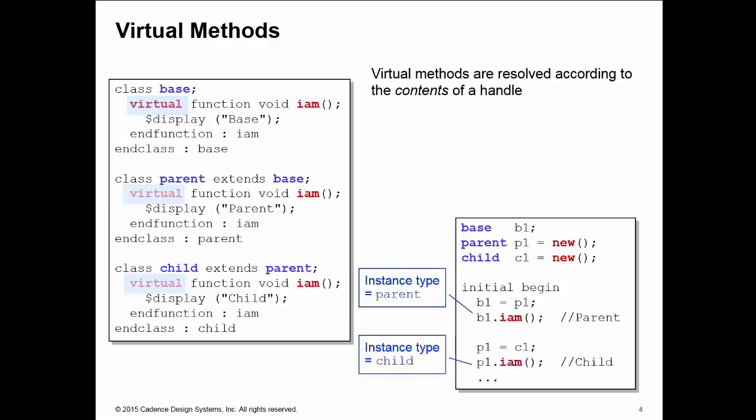This also works for the child class. Calling P1.im will first go to the parent class. When we get there, we find that the method is virtual. We then go back and look at the contents of the P1 handle, see it's pointing at a child instance, and direct the call to the child class to execute the 'I am' implementation of the child class. So now we can access the members of a subclass instance when it's held in a parent class handle — methods by declaring them virtual, and properties by accessing them from a virtual method.